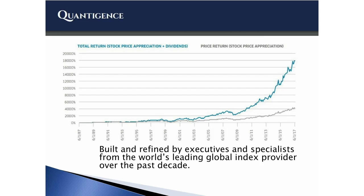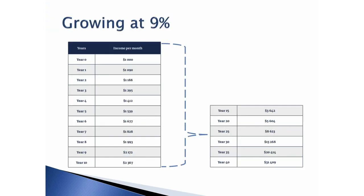We built this strategy. I wanted to show you the power of an income stream that grows at 9%. Interestingly enough, this is actually the average 10-year growth of the 30 stocks in our dividend growth portfolio — on average, they increased their dividend by 9% every year for the past 10 years. That's remarkable. This is what a growing income stream looks like over time. So year zero, you're at $1,000 a month. Year one, $1,090. Year two, $1,188.